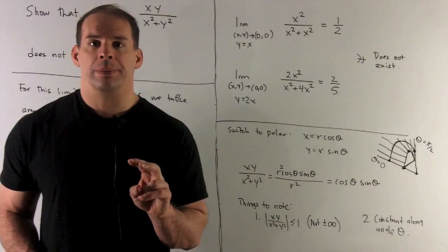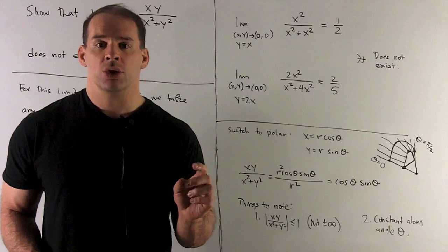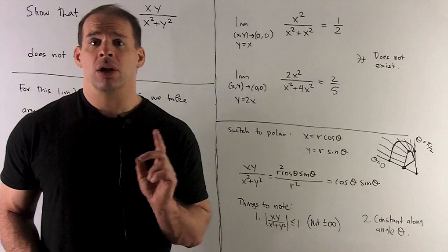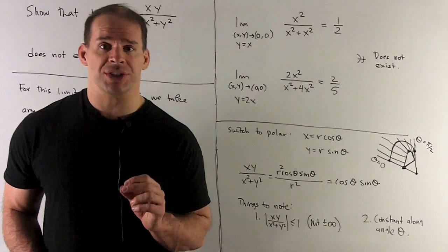Two things to note. First, cos(θ)sin(θ) is always between -1 and 1. So our function's bounded on the entire x,y plane, except at (0,0) where it's not defined.